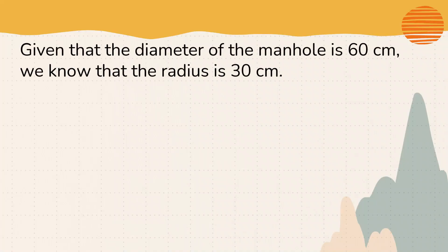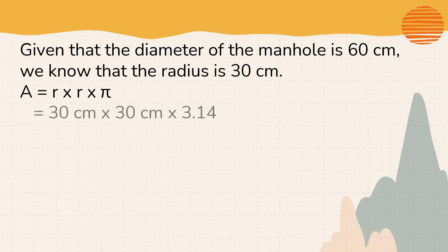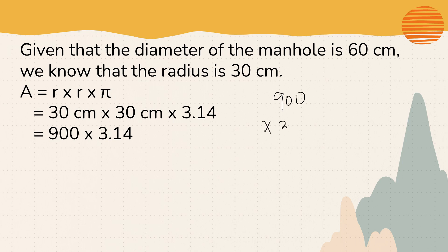Given: the diameter of the manhole is 60 centimeters, so therefore the radius is 30 centimeters — that is half of 60. Following the formula, A equals r times r times pi, we substitute the numbers where radius is 30 centimeters. So A equals 30 times 30 times 3.14. First, 30 times 30 equals 900 centimeters squared.